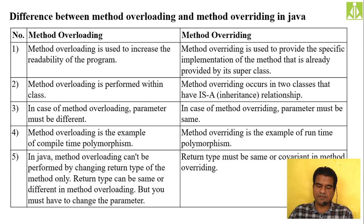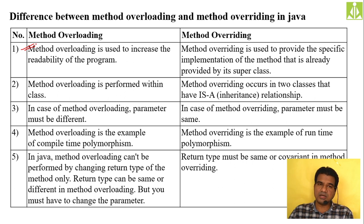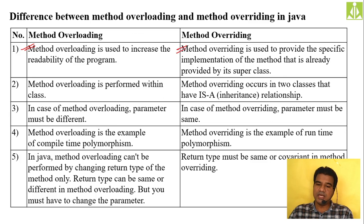Method overloading is used to increase the readability of the program. Instead of taking methods with different names, we take the same method name and change the parameters — that concept is method overloading. Method overriding is used to provide the specific implementation of a method that is already provided in the superclass.